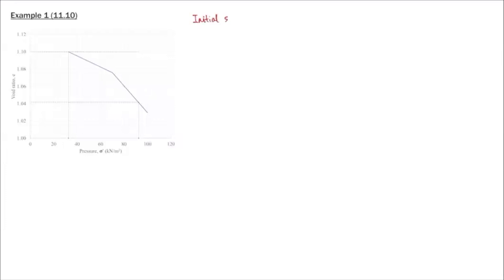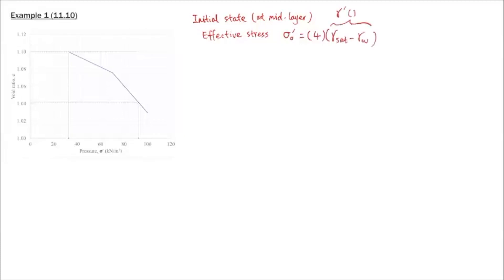First, let's look at the initial state in the clay layer — the initial effective stress at mid-layer. This is the initial state of the representative sample at the middle of the clay layer. The initial effective stress sigma-naught-prime equals 4 meters (the depth of the sample) times the buoyant unit weight, which is gamma-saturated minus gamma-water. Since this clay layer is saturated, we use buoyant unit weight to calculate effective stress. Plugging in the unit weights gives the initial effective stress at the middle of the clay layer: 32.76 kN/m².